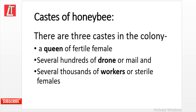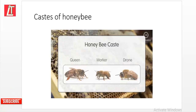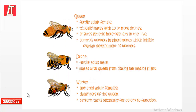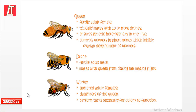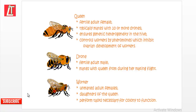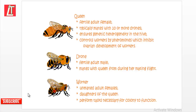Castes of honeybee: there are three castes in the colony — a queen or fertile female, several hundreds of drones or males, and several thousands of workers or sterile females. The queen, a fertile adult female, typically mates with 10 or more drones, ensuring genetic heterogeneity in the hive, and controls workers by pheromones which inhibit ovarian development. Drones are fertile adult males that mate with the queen during her mating flight.